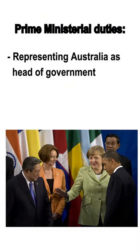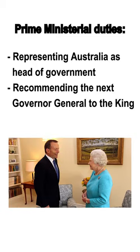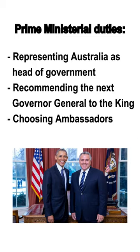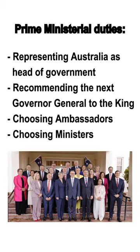As party leadership is a decision of that party, a Prime Minister can be removed mid-term by a leadership challenge. The Prime Minister has a lot of responsibilities, like representing Australia as our head of government, recommending to the Queen the next Governor-General, choosing ambassadors to other countries, and choosing who gets to be ministers.